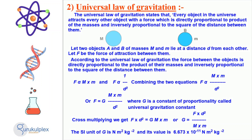The universal law of gravitation states that the attraction between two objects is proportional to the product of their masses and inversely proportional to the square of the distance between them. This can be expressed mathematically as F α m × m, with F being the force of attraction, m and m being the objects' masses, and d being the distance between them. By cross-multiplying this equation, we can determine the constant of proportionality, known as the universal gravitation constant, which has a value of 6.673 × 10⁻¹¹ Nm²kg⁻².